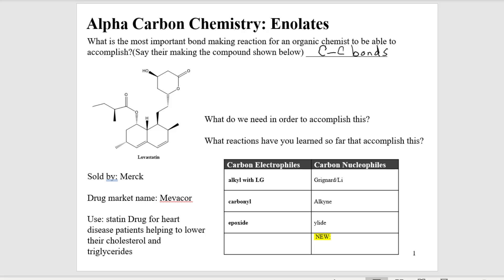So we've seen a few ways of doing this so far. What do we need in order to accomplish this? We need one carbon to be positive or partially positive, and we need the other carbon to be negative or partially negative.